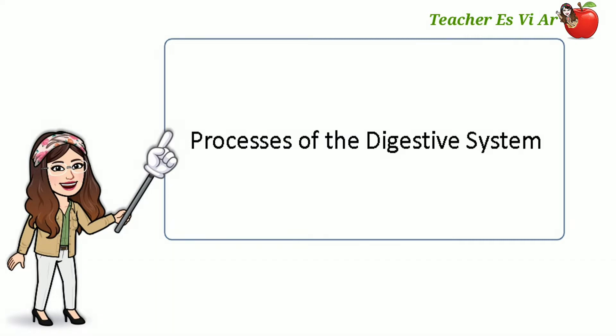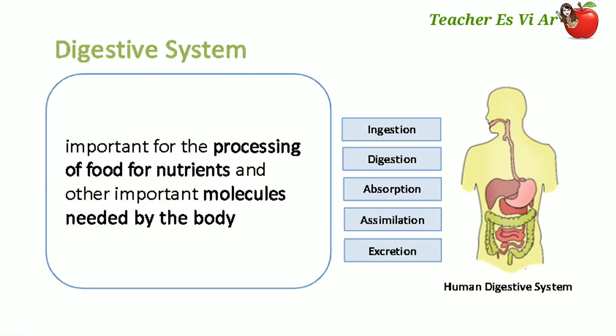The digestive system is important for the processing of food to get nutrients and other important molecules for life. There are five main processes in the digestive system. These are ingestion, digestion, absorption, assimilation, and excretion.